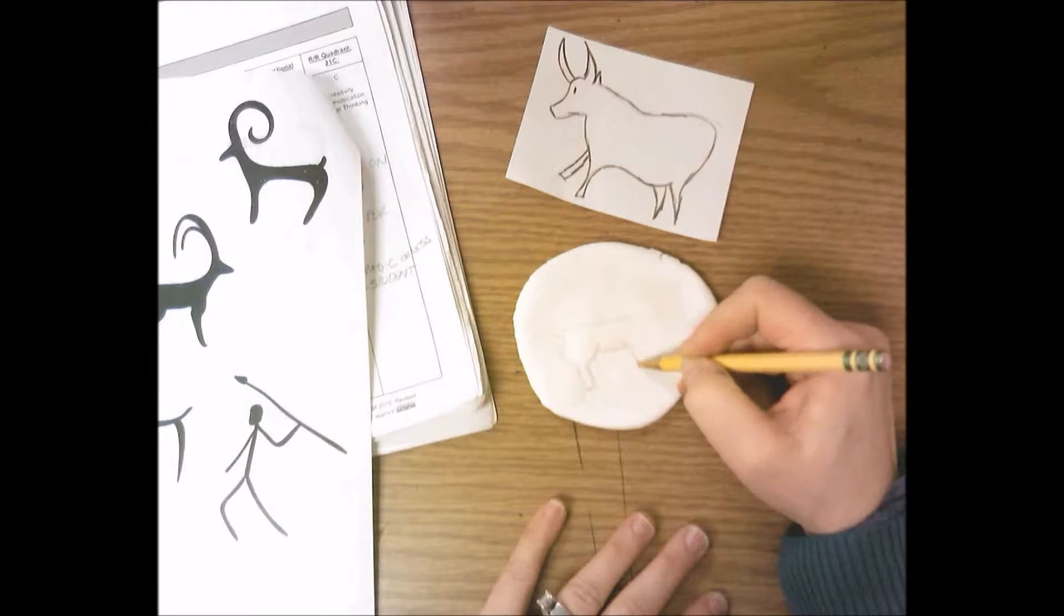Then you're just going to take your black Sharpie marker and you're going to trace right over the top. You're not pressing down hard with the Sharpie marker because it won't want to go across your piece. It'll get kind of caught up in this soft material.